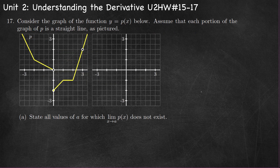Number 17: consider the graph of the function y equals p(x), where each portion of the graph is a straight line. Part A, state all values of a for which the limit of p as x approaches a does not exist. We have a removable discontinuity at three, but the limit does exist there. We also have a jump discontinuity at x equals zero, so that's the value where the limit does not exist. A equals zero.